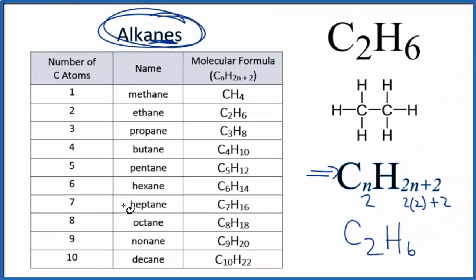To recap, the name for C2H6 is ethane. It is an alkane, with all single bonds, and follows this general formula. This is Dr. B with the name for C2H6. Thanks for watching.